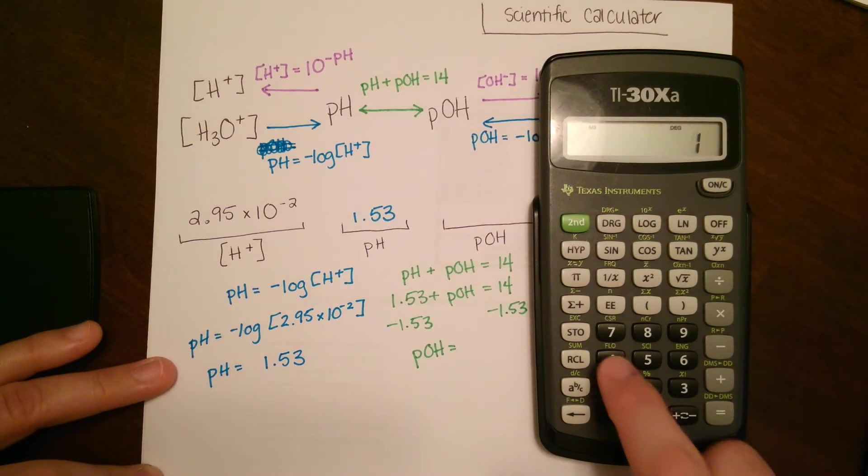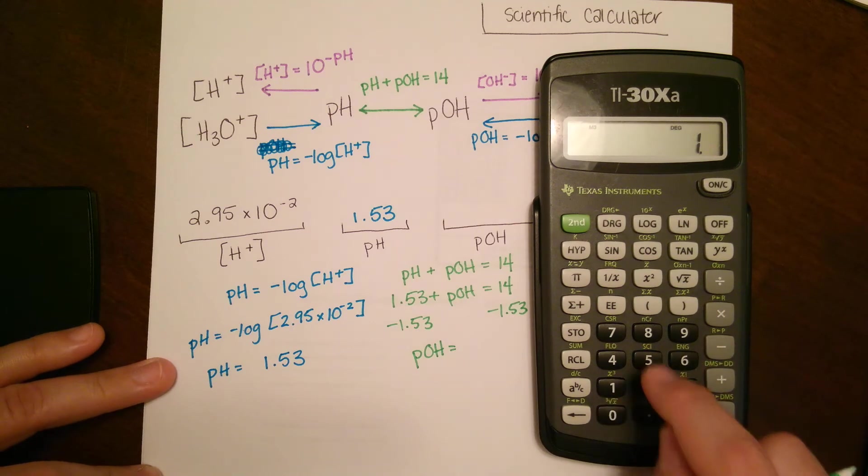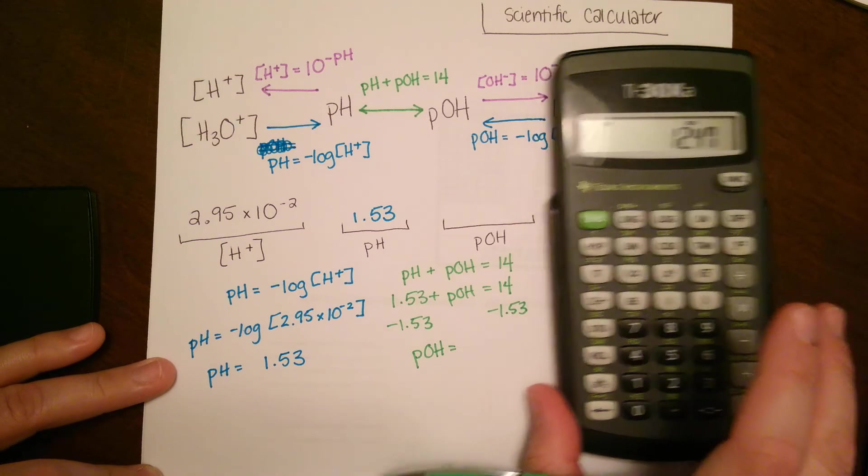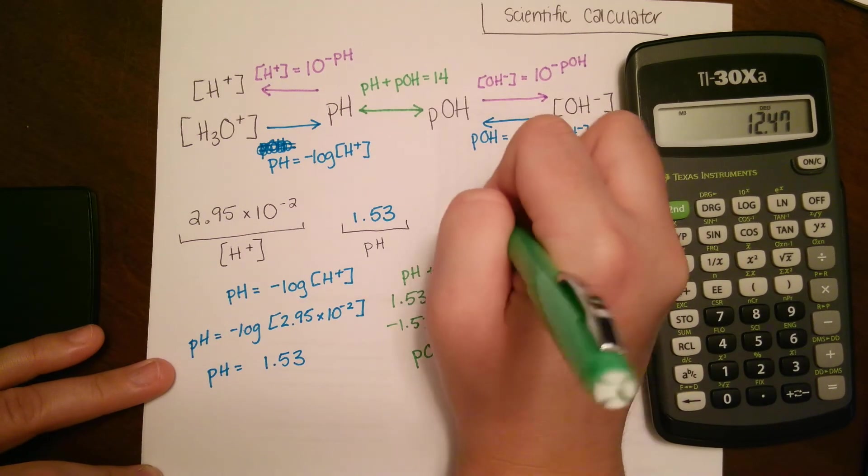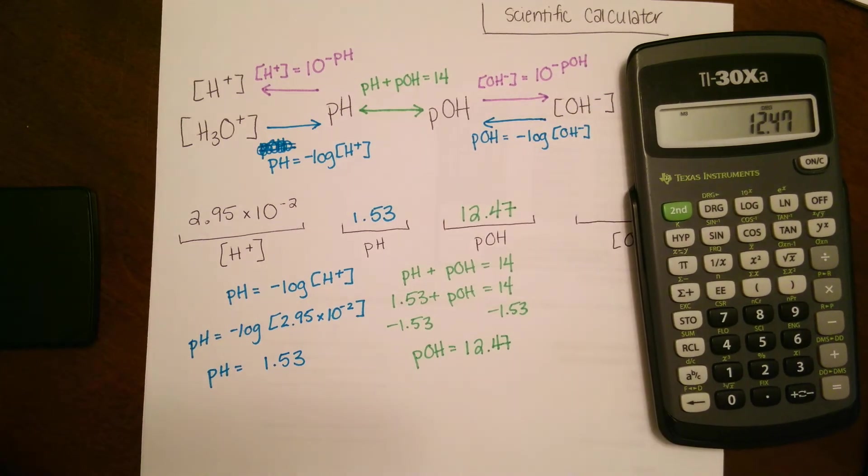This one should be pretty easy: 14 - 1.53 = 12.47.